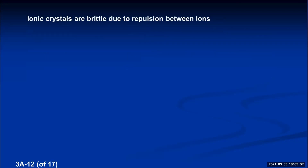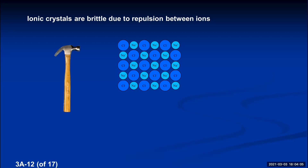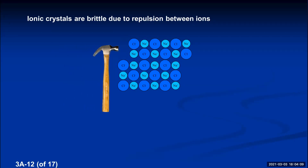One final property of ionic crystals: they are brittle. If you hammer a salt crystal, the ions shift and like charges end up adjacent to each other, causing repulsion that shatters the crystal. This is why ionic crystals break apart when hammered, sometimes along clean flat faces.